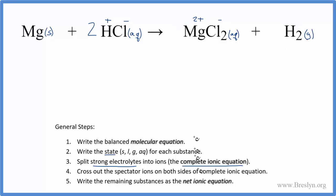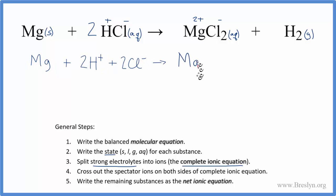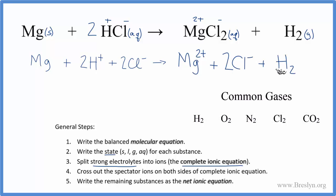Now we have all the information to write the complete ionic equation: Mg, plus 2H+, plus 2Cl−, gives us Mg²⁺, plus 2Cl−, plus H₂ gas. We don't break up the hydrogen gas. That's the complete ionic equation. The coefficient of 2 applies to both H+ and Cl−, so we have two of each on the reactant side.